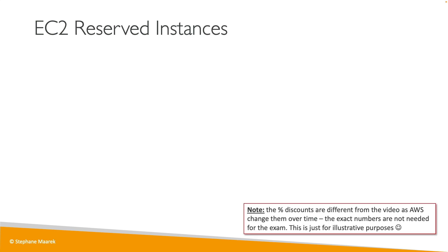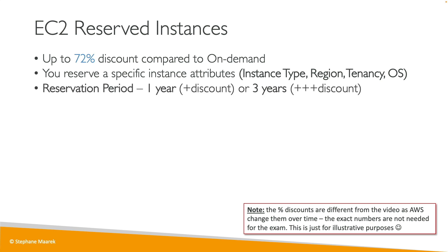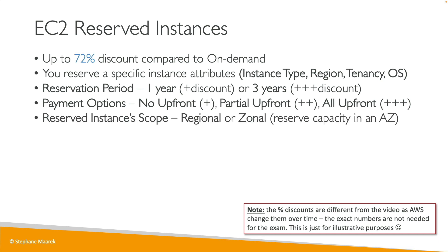For reserved instances — and the numbers I show can change over time, so this just gives you an idea — they give you a 72% discount compared to on-demand. You reserve a specific instance attribute, for example the instance type, region, tenancy, and OS. You specify a reservation period of one or three years to get even more discounts, and whether you want to pay all upfront, partially upfront, or not upfront. All upfront gives you the maximum discount.